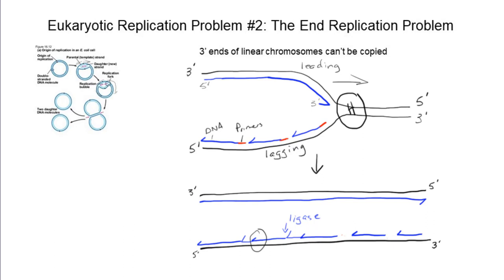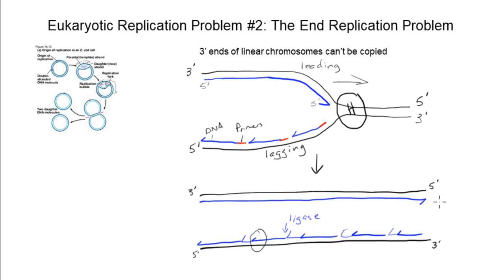But what happens with the parental template at the 3' end? It hasn't been copied. Even if, for the sake of argument, an RNA primer was laid down right at the very end of the template and extended, once it's removed, there's no DNA to extend to fill in that gap. We have a 3' end of the parental template DNA that cannot be replicated. This is what we mean by the end replication problem in eukaryotes.